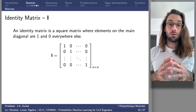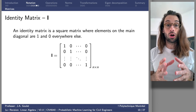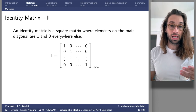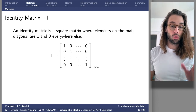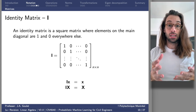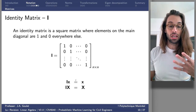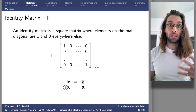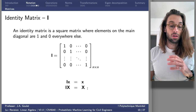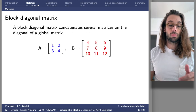The identity matrix is a diagonal matrix where the non-zero terms on the main diagonal are always 1 — so 1 on the main diagonal and 0 everywhere else. Here I have an n by n identity matrix. There's a special property: if I multiply a vector by the identity matrix, it remains the same vector. If I multiply the identity matrix by a matrix X, it remains matrix X. Multiplying by the identity matrix doesn't change the result.